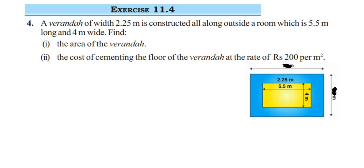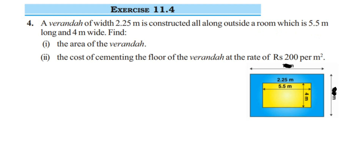Here is a question from exercise 11.4, fourth question of the perimeter and area chapter of class 7. A veranda of width 2.25 meters is constructed all along outside a room which is 5.5 meters long and 4 meters wide. We have two questions: first, find the area of the veranda, and second, find the cost if the rate is 200 rupees per meter square.